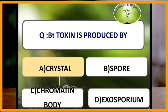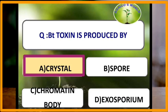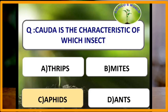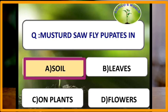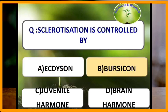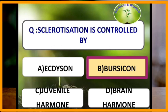Bt (Bacillus thuringiensis) toxin is produced as a crystal. Mustard sawfly pupates in soil. Sclerotinization is controlled by bursicon.